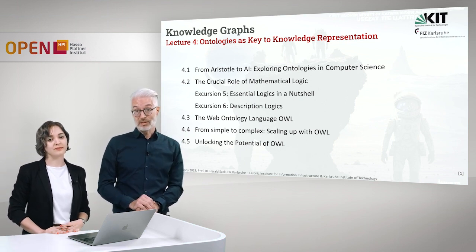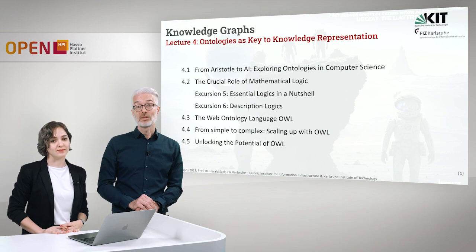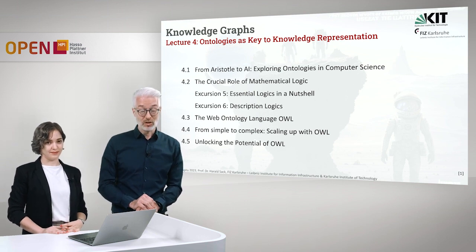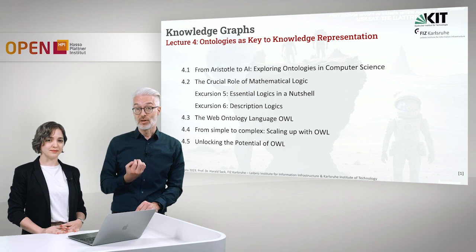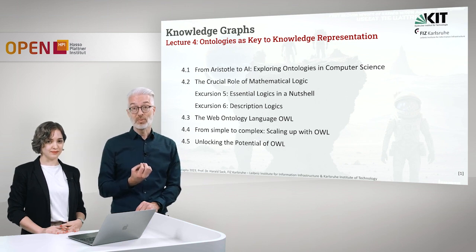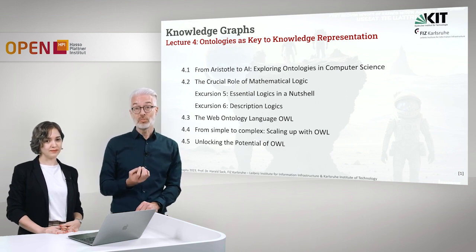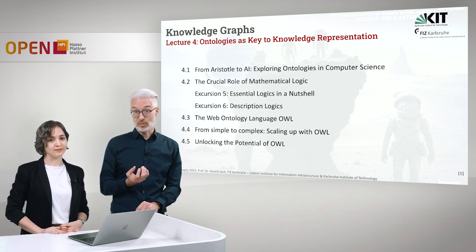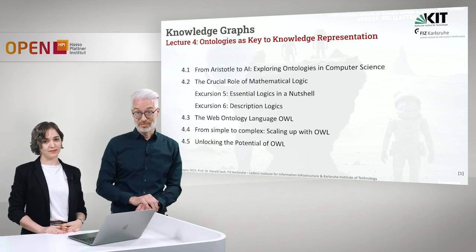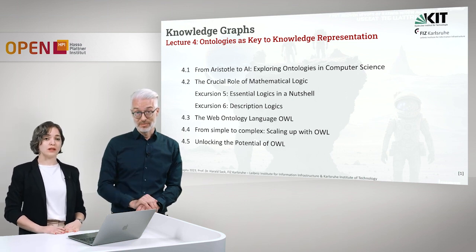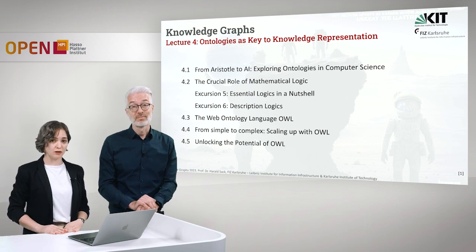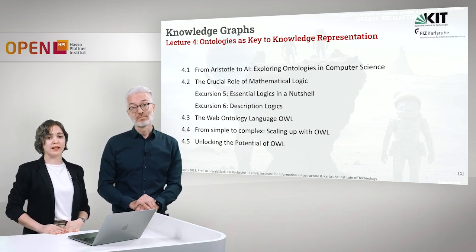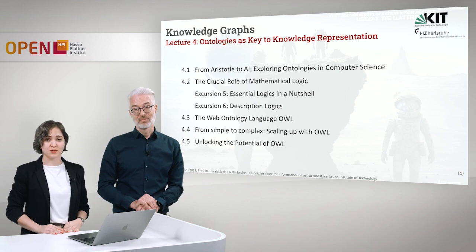There are smarter ways to do that, and one of them is called description logics — small but expressive fragments from first-order logic, powerful enough to cope with our requirements for knowledge representation. Afterwards we will introduce the Web Ontology Language, or OWL, and show you what abilities it has to describe an ontology.